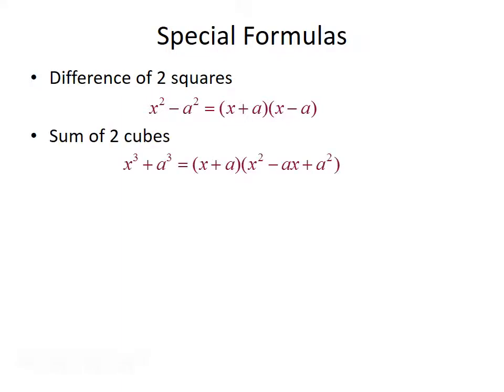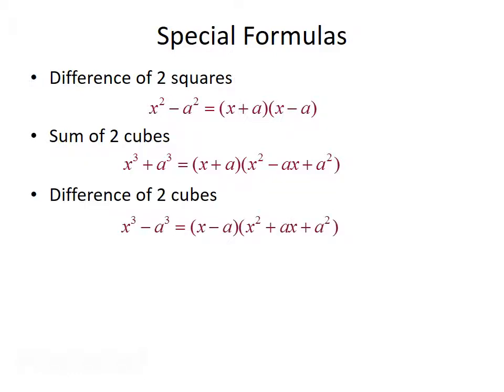Next we have the sum of two cubes. If your polynomial takes the form x cubed plus a cubed, you can factor that out to be x plus a times x squared minus ax plus a squared. Then we have the difference of two cubes. If the polynomial is x cubed minus a cubed, that can be factored to be x minus a times x squared plus ax plus a squared.